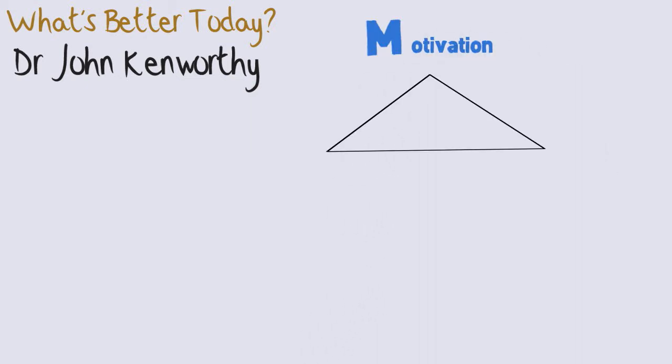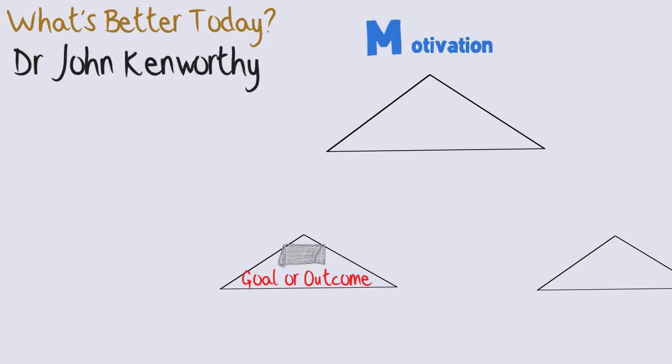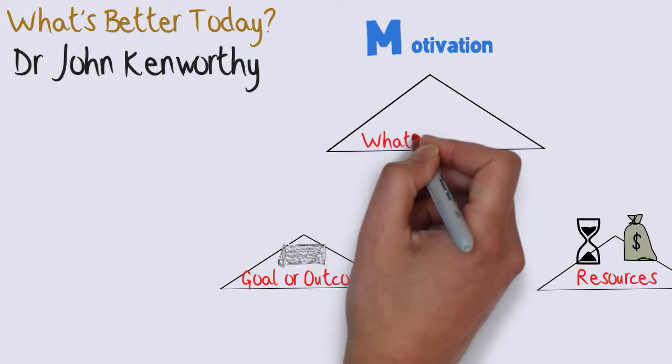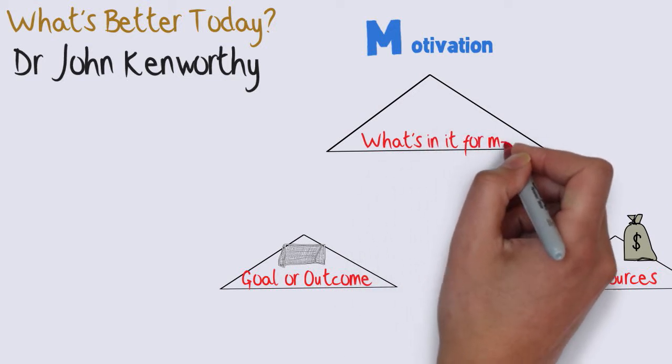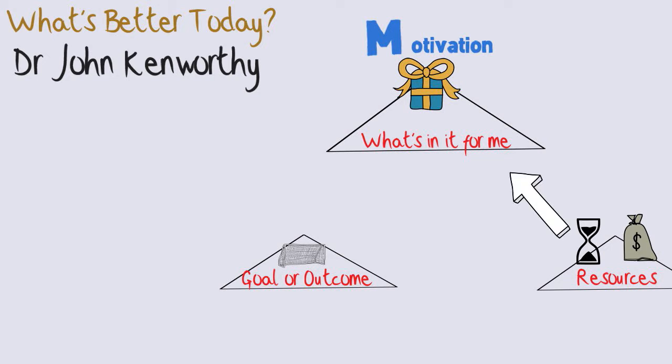M is for motivation. Motivation is something that is generated by the interaction of three aspects of anything we do. We have a goal. We have certain resources: our mind, our body, money, tools, knowledge, skills. And we utilize those resources to satisfy something that we personally value.